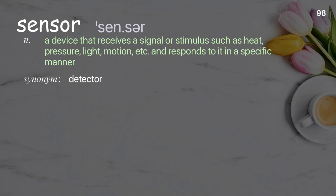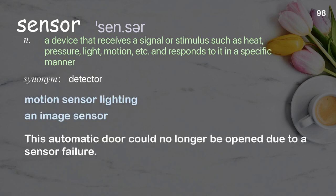Sensor: a device that receives a signal or stimulus such as heat, pressure, light, motion, etc. and responds to it in a specific manner. Examples: motion sensor lighting, an image sensor. This automatic door could no longer be opened due to a sensor failure.